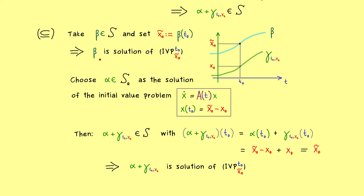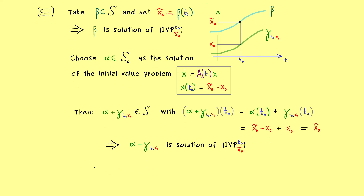This is the same initial value problem as we had for β. By the uniqueness result of Picard-Lindelöf, β is exactly the same function as α + γ. Every β in S has the form α + γ, so both inclusions are shown and the equality of the sets is proven.